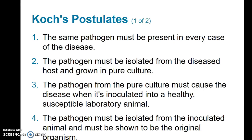There is a specific set of steps called Koch's postulates, developed to determine what pathogen causes a particular disease and support the idea that a particular disease is caused by a particular species of pathogen. The first postulate is that the same pathogen must be present in every case of the disease — every time you see a particular disease, you should be able to isolate that particular pathogen.